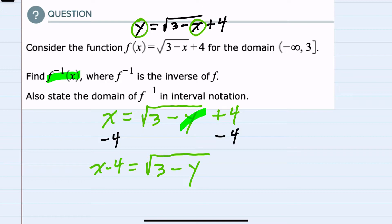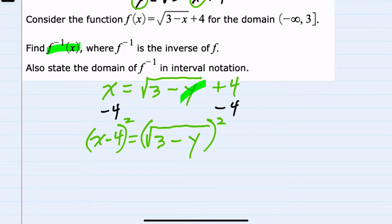And then to continue solving for y, I could square both sides of this equation. That would have the effect of x minus 4 squared on the left. On the right-hand side, the square and square root will cancel, leaving 3 minus y.